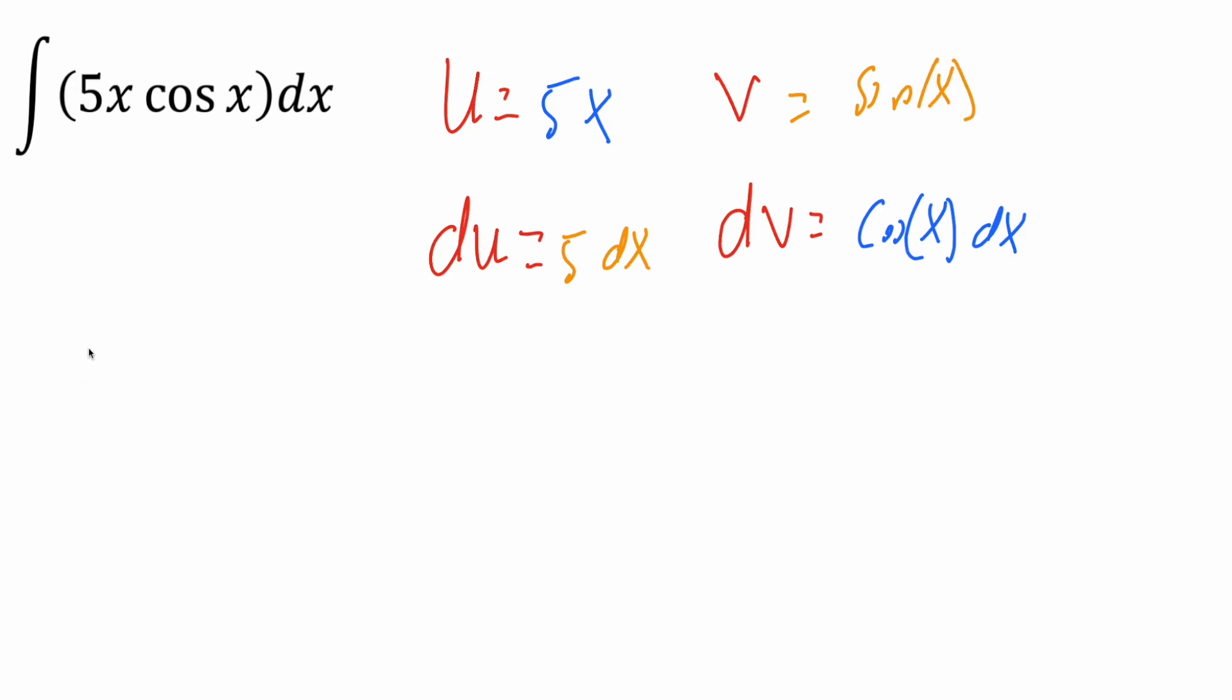With integration by parts, our setup is going to look like: the integral of u dv equals u v minus the integral of v du.